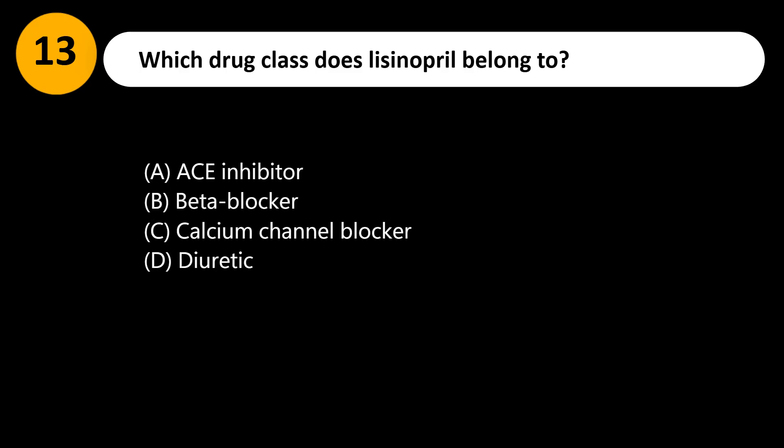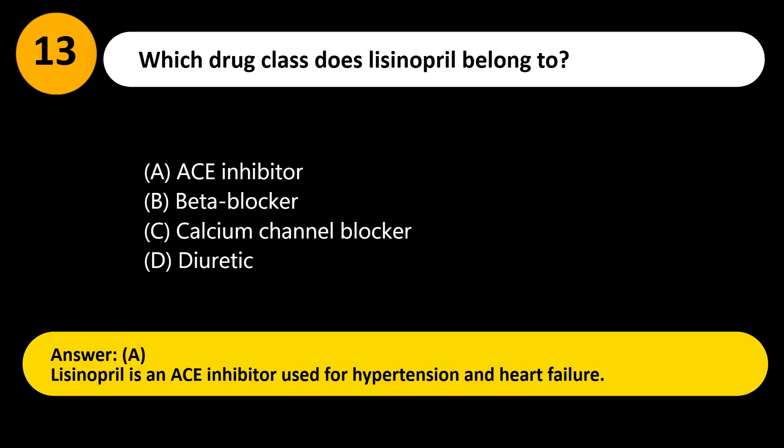Which drug class does lisinopril belong to? A. ACE inhibitor. B. Beta blocker. C. Calcium channel blocker. D. Diuretic. Answer: A. Lisinopril is an ACE inhibitor used for hypertension and heart failure.